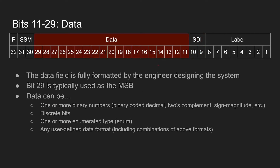The next part of the ARINC word is the data, and this is the meat of the word. The data is fully formatted by the engineer designing the system. Usually bit 29 is our most significant bit and bit 11 is our least significant bit. This is a little confusing because it's the opposite for the label, where 8 was our least significant bit and 1 was our most significant bit — so the order is kind of reversed for the data. The bits in the data field can be formatted in all kinds of different ways: one or more binary numbers, binary coded decimal, two's complement, sign magnitude, whatever you like.